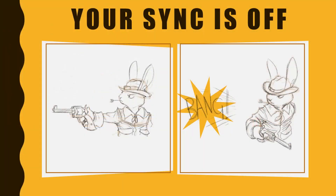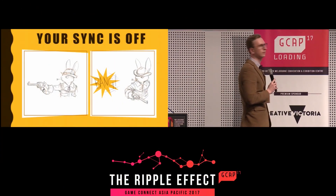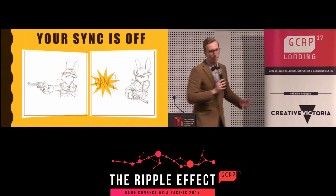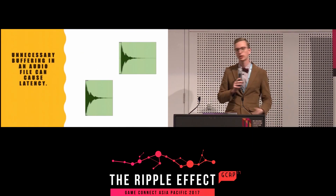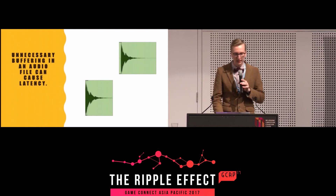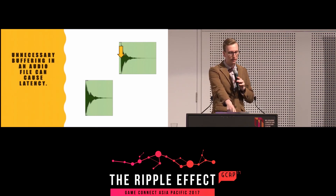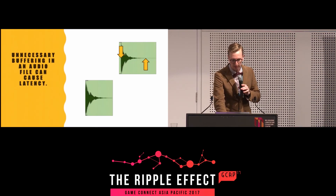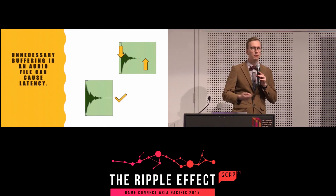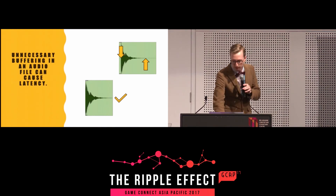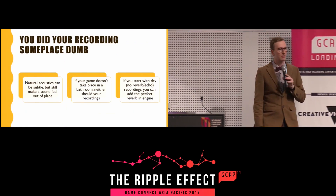Another problem: your sync is off. If you fire a gun and the bang happens afterwards, that's no good. The problem is that if you're working in film or other backgrounds, a little bit of head and tail on your sounds doesn't matter, but in games it's very important. That little bit of silence at the start — chop it out. The tail at the end is useless too, taking up space — get rid of it. Then when you shoot the gun, the bang will actually happen on time.